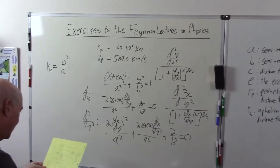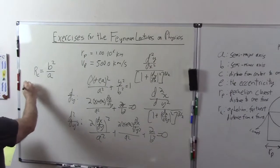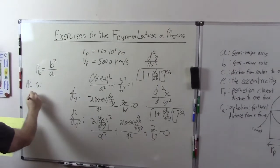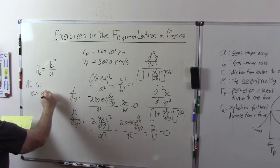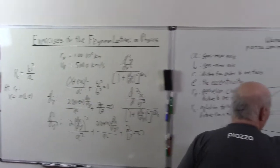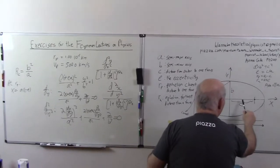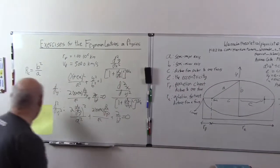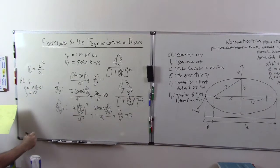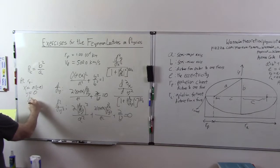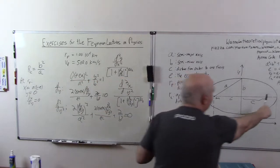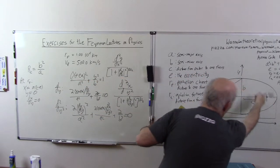Now at the perhelion, X is equal to A times 1 minus E, simply because I'm measuring just this distance, it's A minus C. C is EA, so it's A times 1 minus E. Y is equal to 0. dx dy equals 0, because dy dx is infinity, so dx dy, if you look at it this way, it's flat, 0.